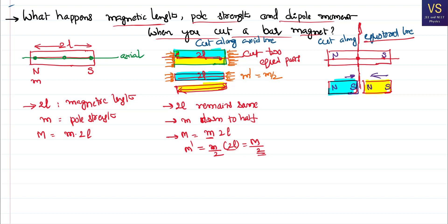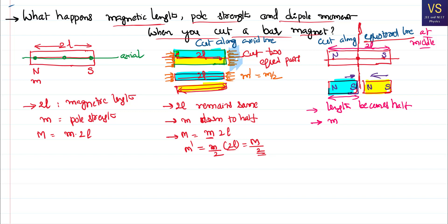Now what happens to the length of each piece? Originally the full length was 2L, but after cutting at the middle each piece has only half that length — so magnetic length becomes L (half of 2L). What happens to pole strength? As mentioned, pole strength is due to tiny molecular magnets. In each piece, the number of molecules at the cross-section were not reduced, so pole strength remains the same.